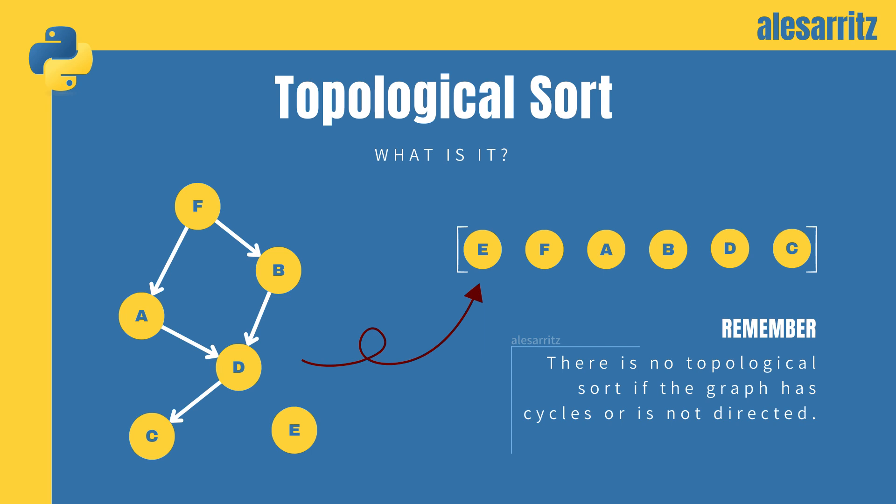However, it is important to remember this simple rule. There is no topological sort if a graph has cycles or is not directed.